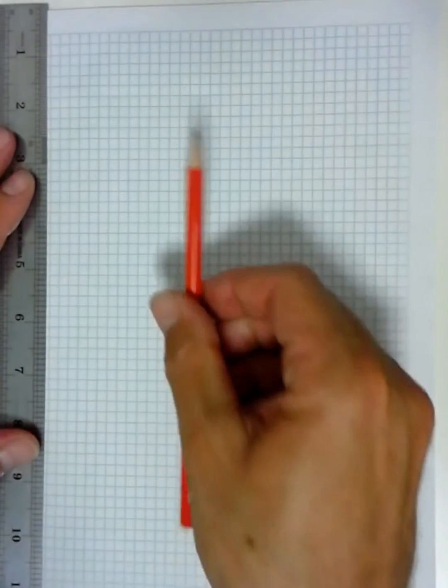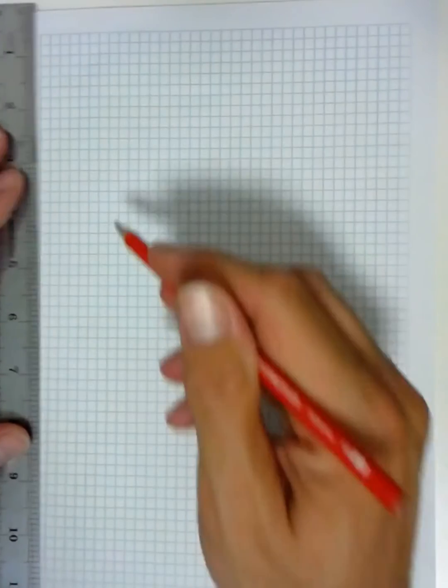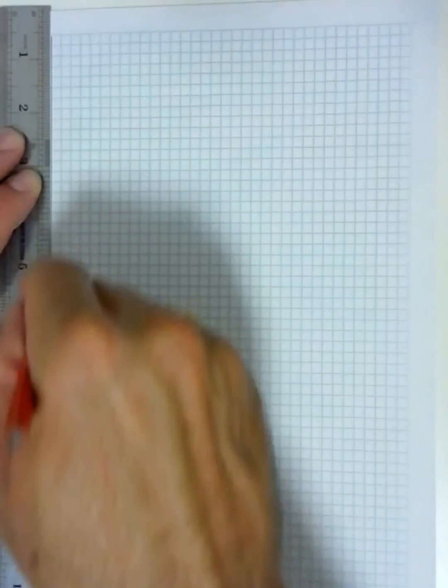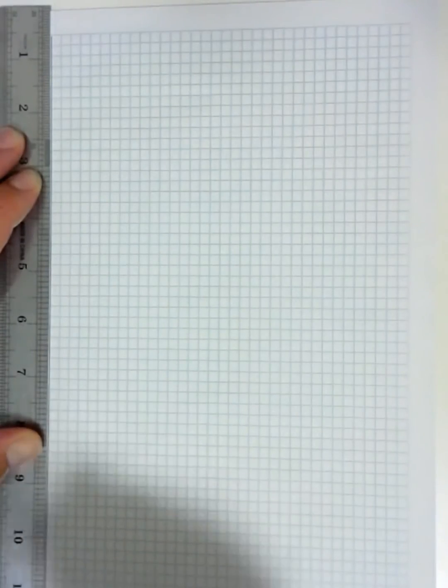Using our tools, our pencil and ruler, we're going to rule a two square margin down the left hand side all the way down.